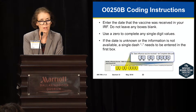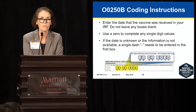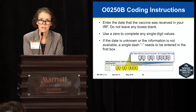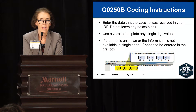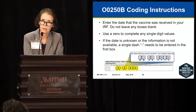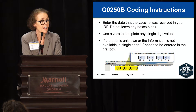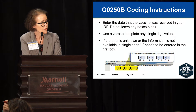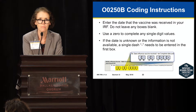You code no for A if the patient did not receive the vaccination in your facility, and code yes if they did. You enter the date the vaccine was received in your IRF and don't leave any blank boxes. If it's February 2nd, it's coded 0202. If the date is unknown, a single dash needs to be entered in the first box.